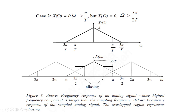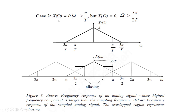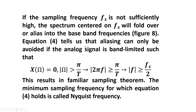Folding frequency means where the aliasing will take place and the frequencies will fold over. This will happen only when the analog spectrum extends beyond minus pi by capital T on the negative side and pi by capital T on the positive side. If the analog signal is not band-limited, then the aliasing will take place in the signal.